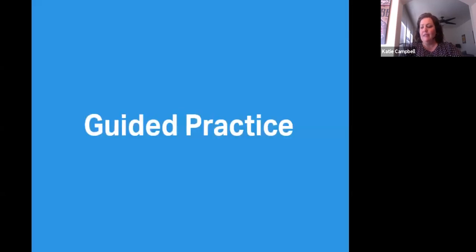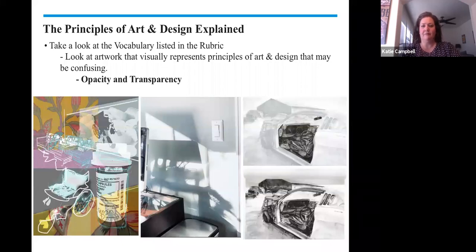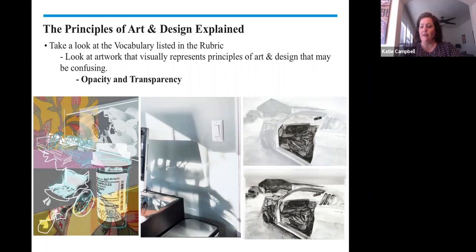So let's take a look at opacity and transparency. Opacity and transparency is used to describe how much light can pass through an object or a layer, ranging from transparent through translucent to opaque.